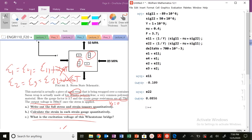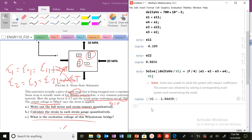So the only thing I have to solve for, I just need to solve for delta V naught divided by VI. Set that equal to F divided by 4 times E1 minus E2 minus E3 plus E4. And I'm going to solve for VI.